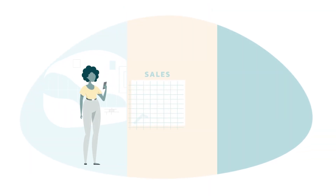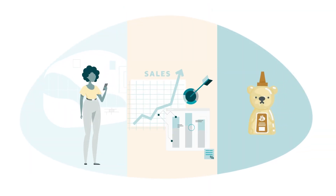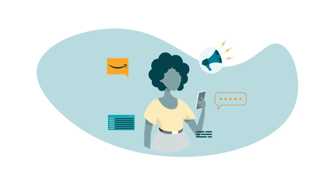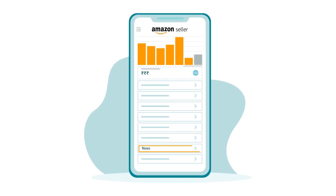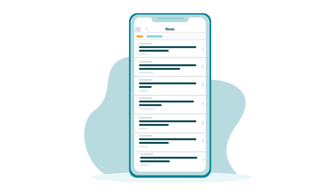These reports give you an immediate snapshot of your brand storefront's performance down to the individual ASIN level. To stay current on Amazon policies and other incoming updates related to your selling account or Amazon Marketplace, check the News tab. Find it on your homepage to see the most recent articles.